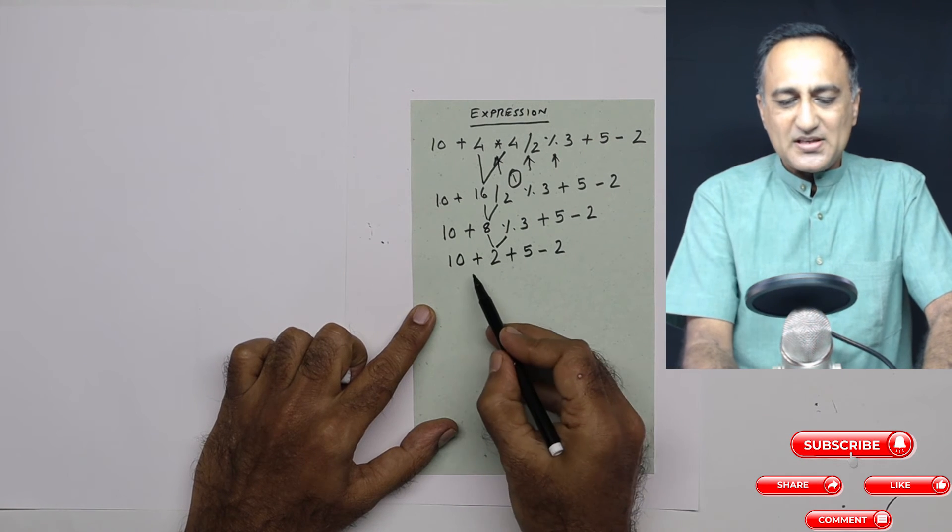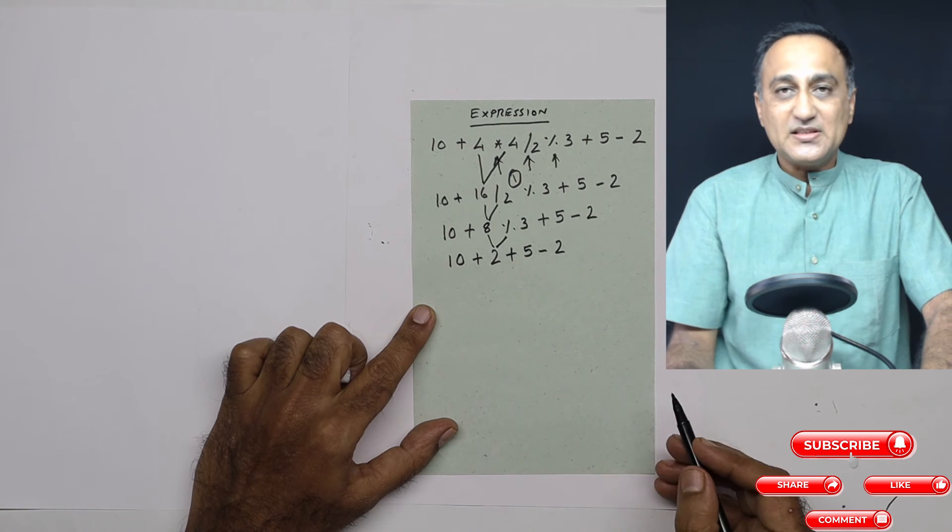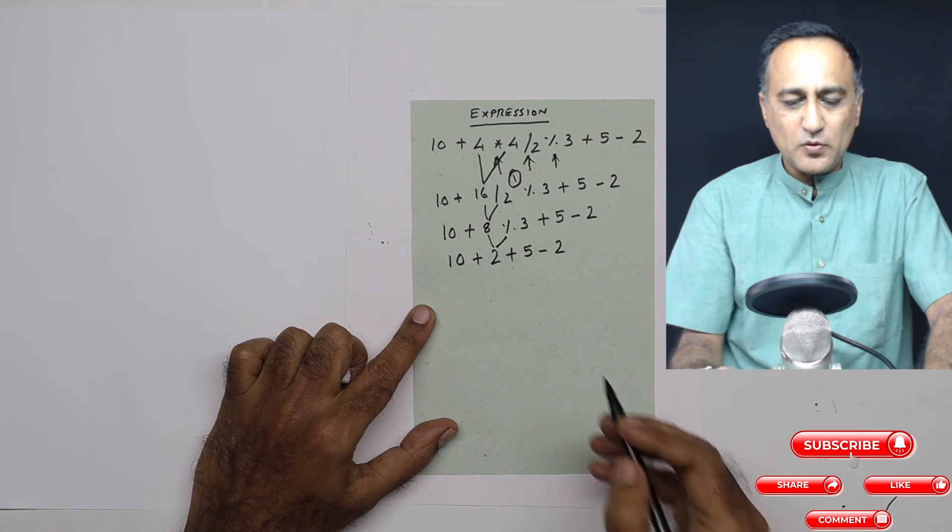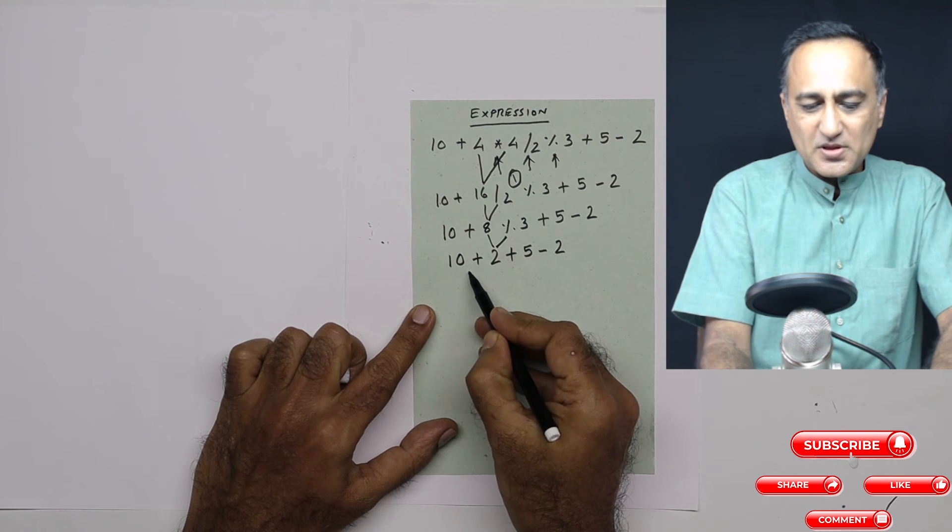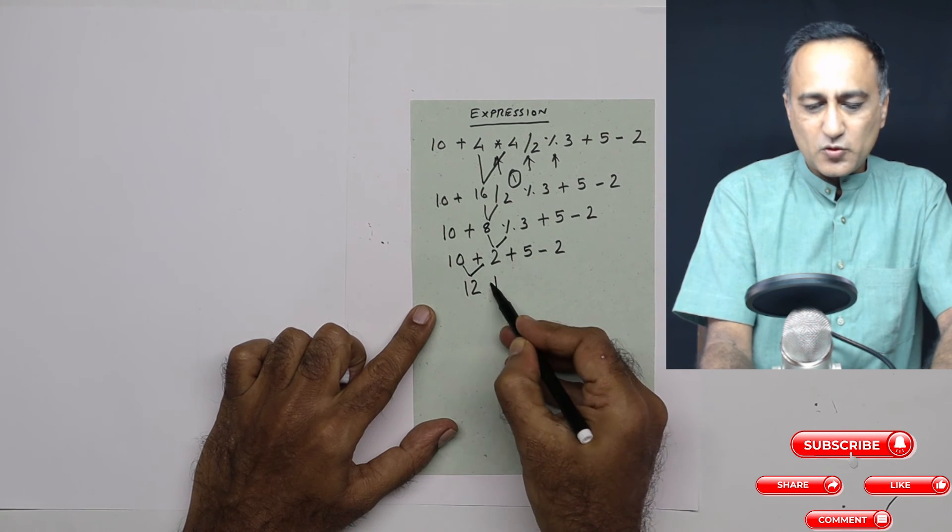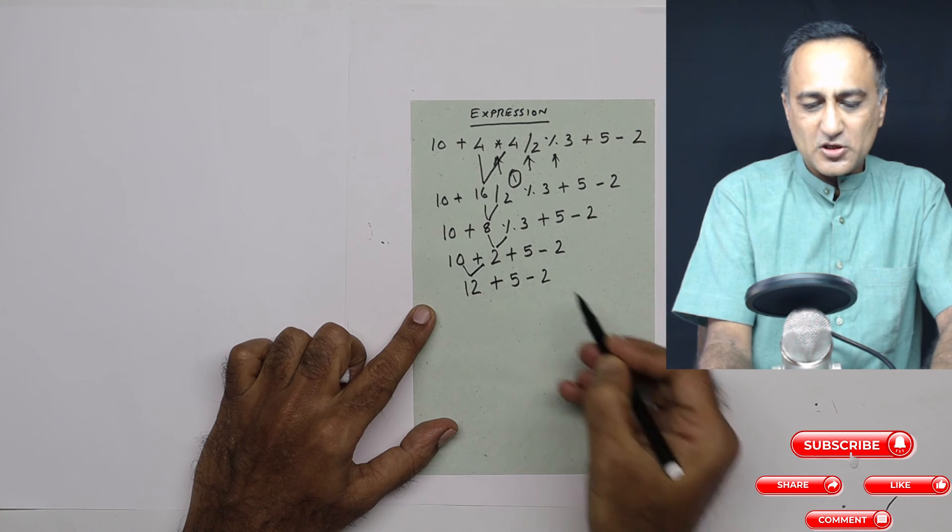The next step is quite easy because all operators have the same precedence, but the rule of associativity states go from left to right. So first, 10 plus 2 is going to be 12, then 12 plus 5 minus 2.